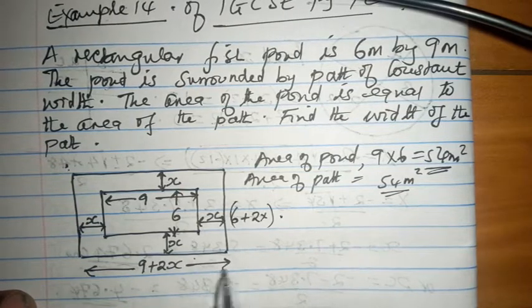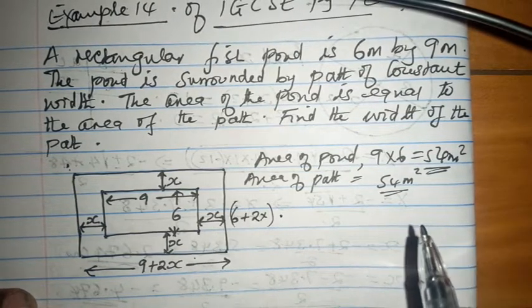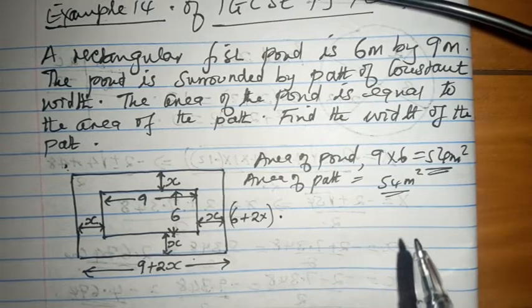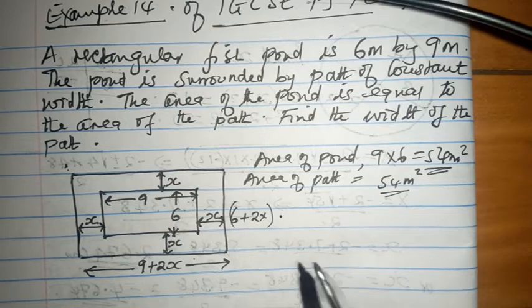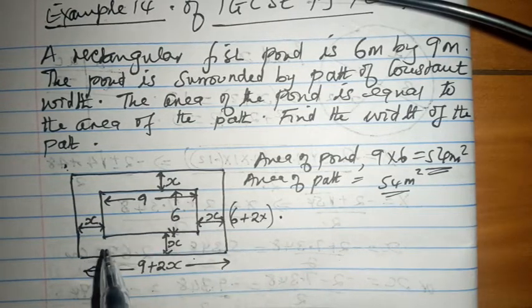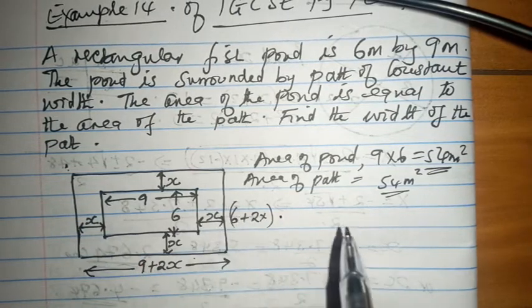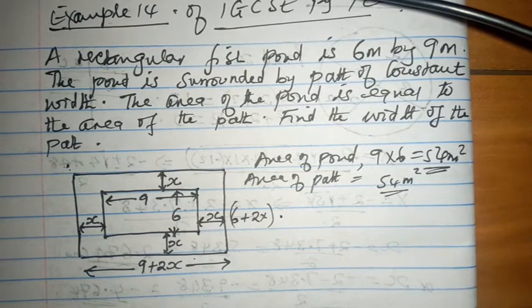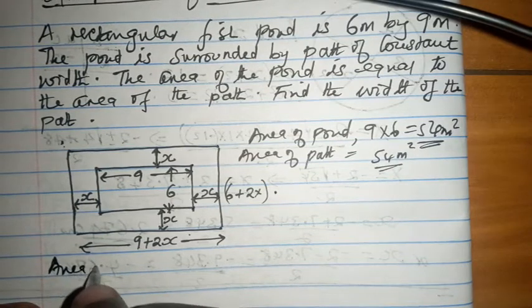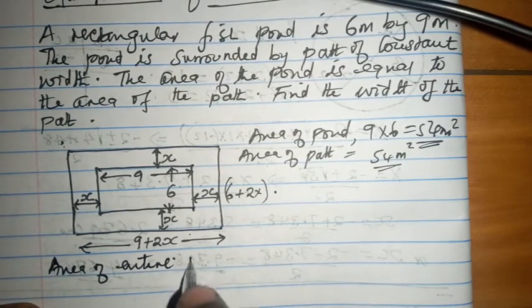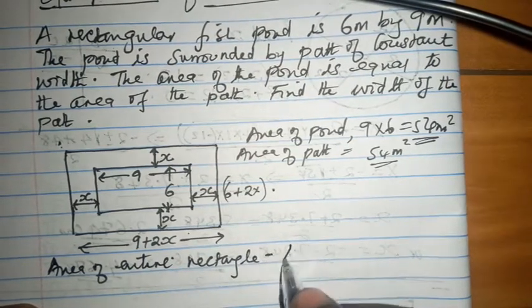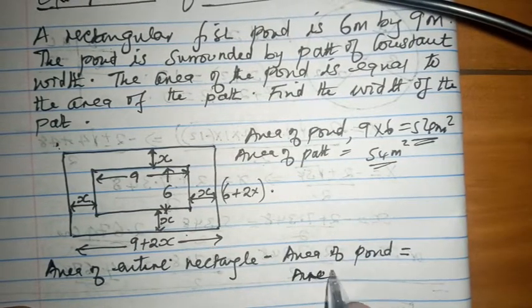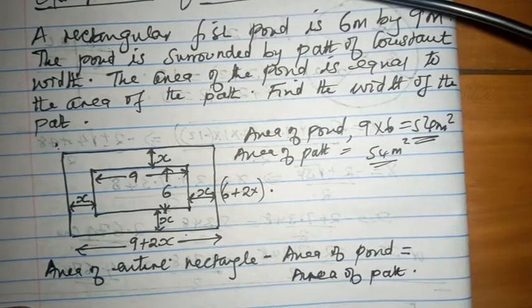If we get length times width, we are going to get the entire area of the whole rectangle that includes the pond and the path. But if we subtract the area of the pond from the entire rectangle, we are supposed to be left with the area of the path.